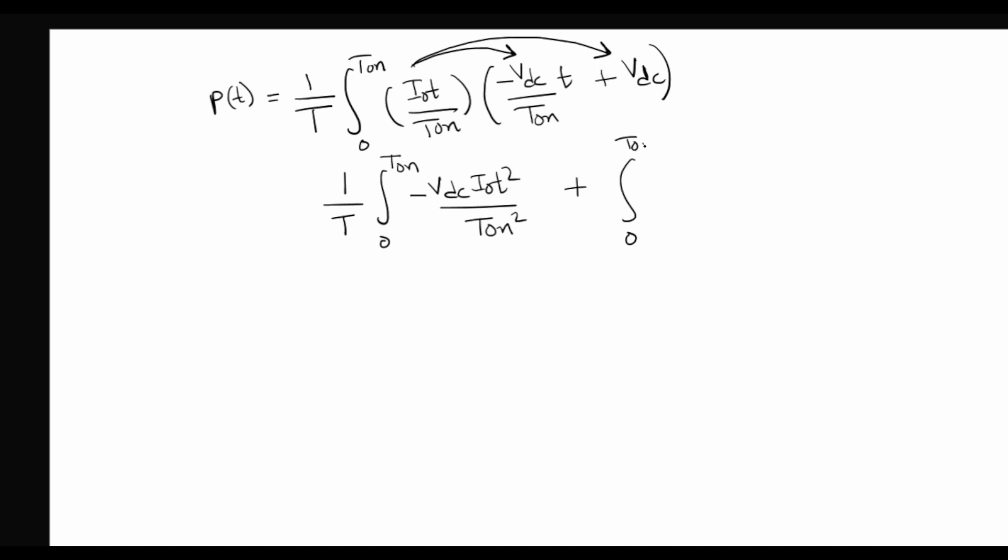0 to T on, I0 times VDC times t over T on, and then we choose a dummy variable d tau in order to perform this integration.